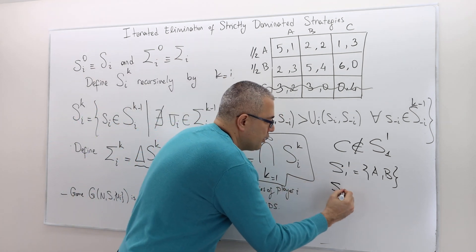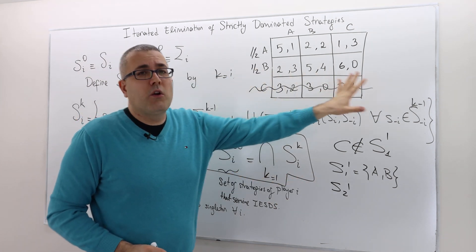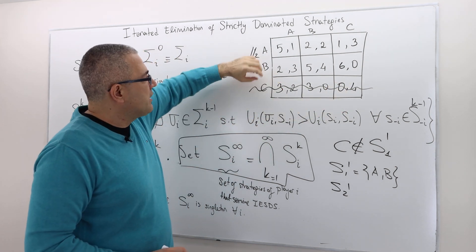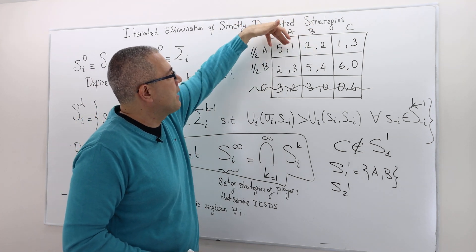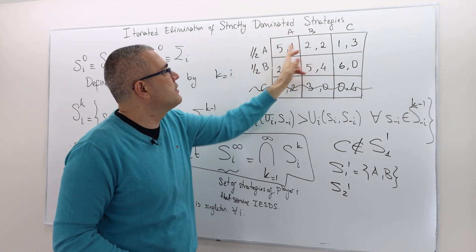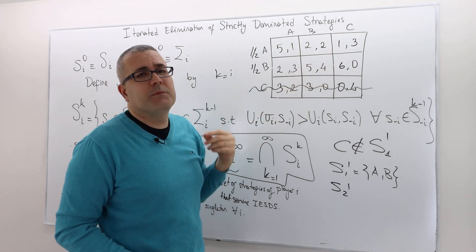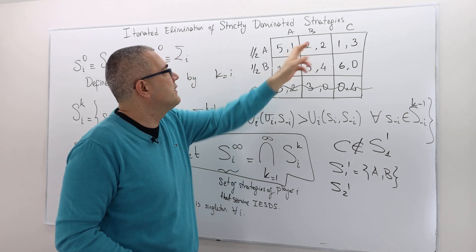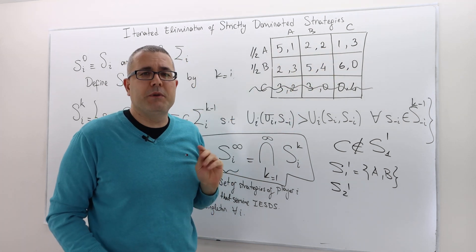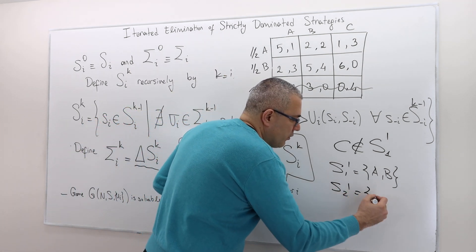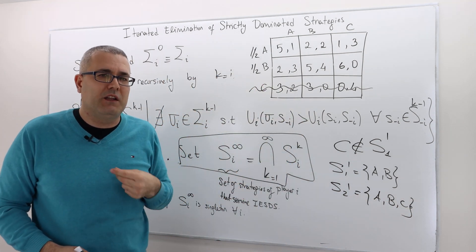What about S_2^1, player two's first iteration? Looking at A vs. B: B is sometimes better, but sometimes A is better — no domination. A vs. C: C is sometimes better, but A is sometimes better — no strict domination. B vs. C: two is worse than three, but four is better than zero — no strict domination. So S_2^1 equals {A, B, C} — all strategies of player two survive the first step.